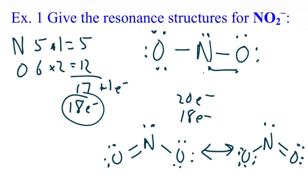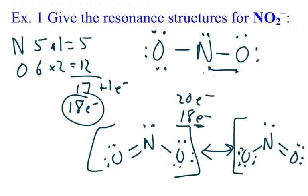Now, because this is a polyatomic ion, we must put it in a bracket. Don't forget to do that — the charge goes on the outside, so there's a negative one there. Do the same thing on the other structure. Always remember: put it in a bracket and put the charge on the top right-hand corner.